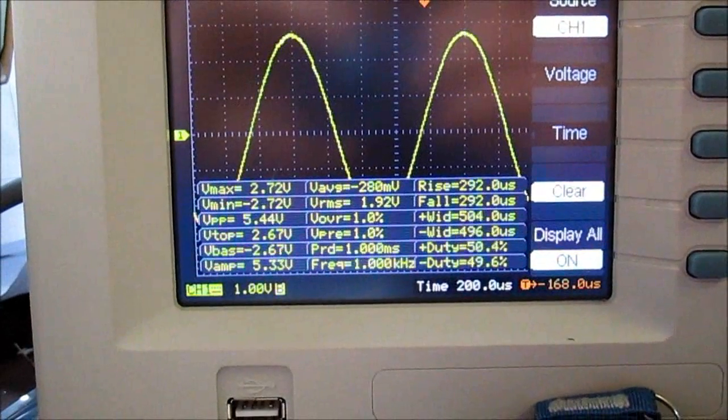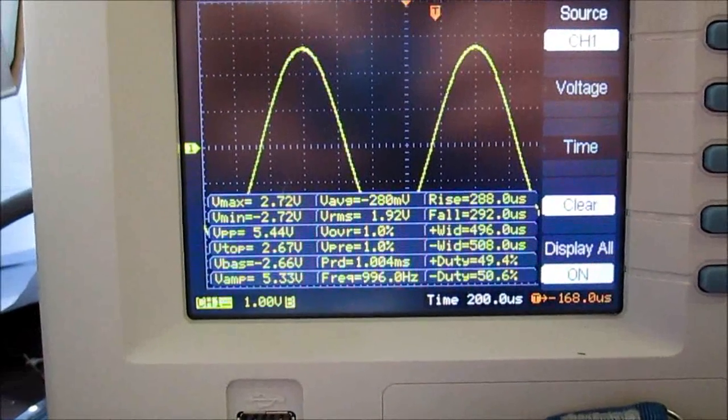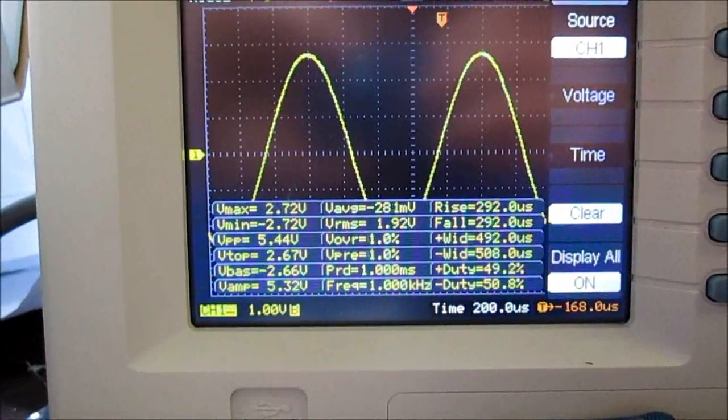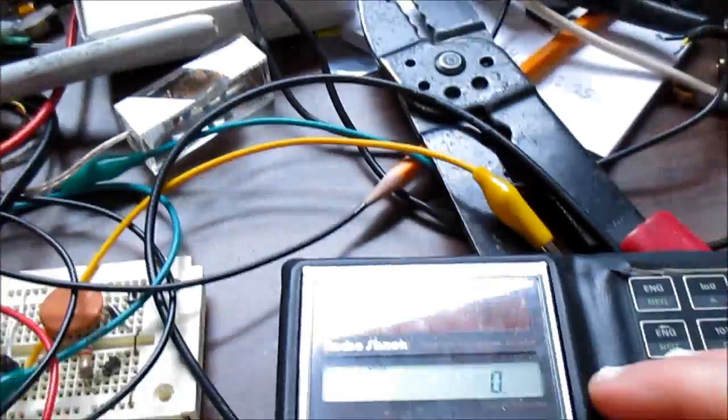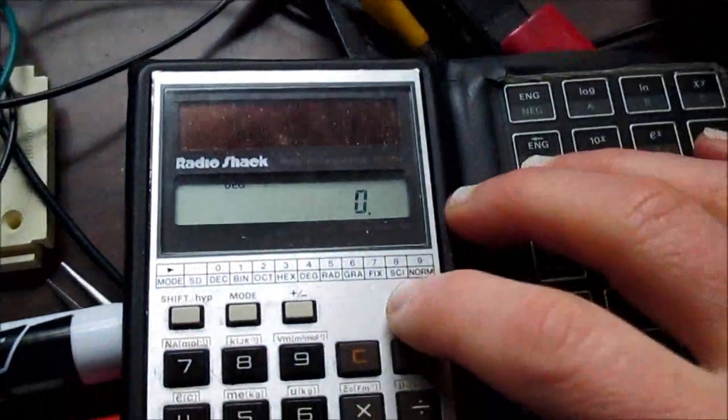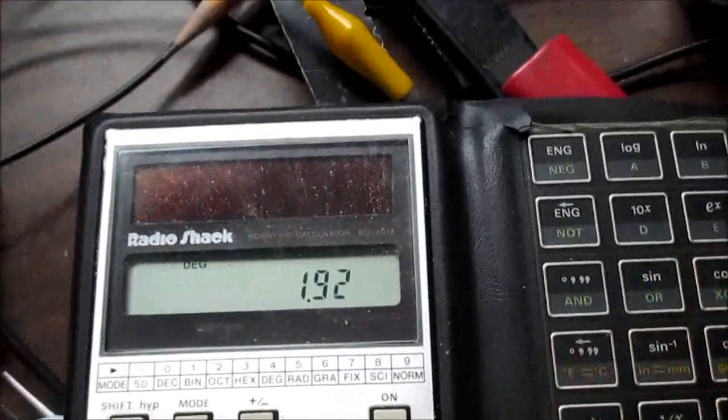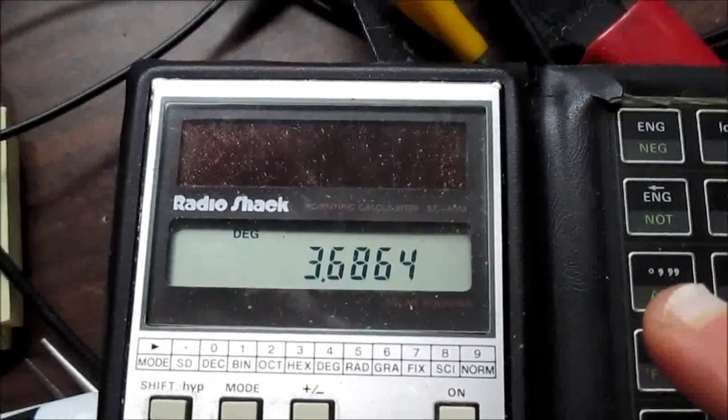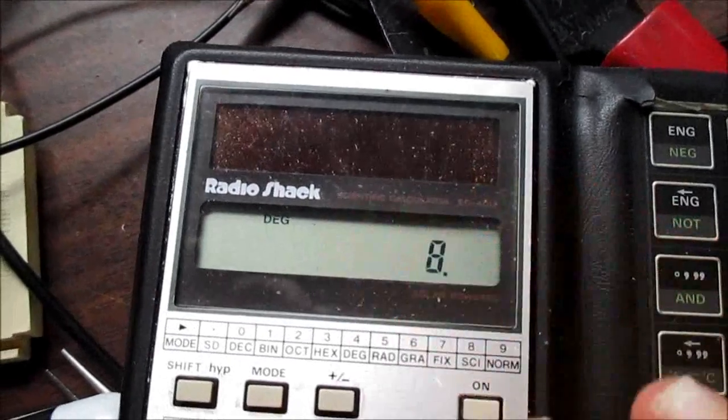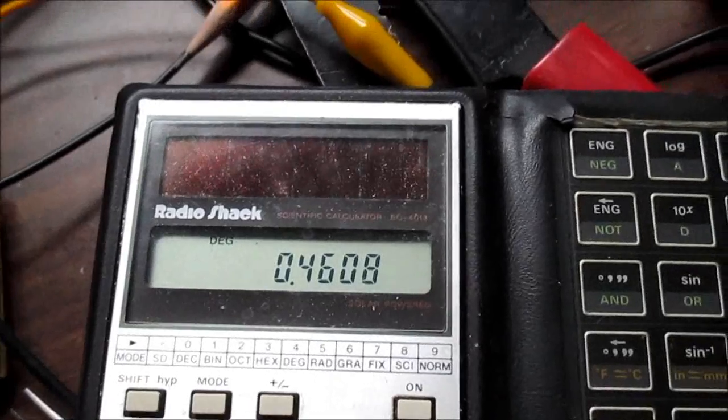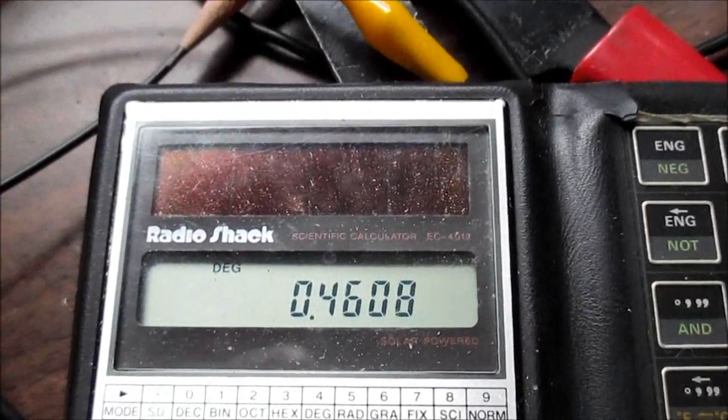1.92 volts RMS. Okay, so I'll punch that in, 1.92. You have to square that, divided by our load impedance of 8 ohms, and we're getting 0.46 watts. Not too bad.